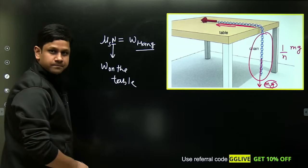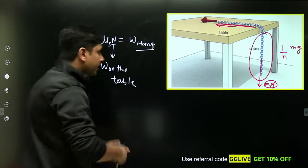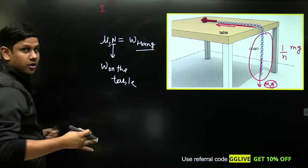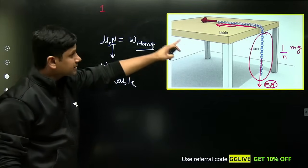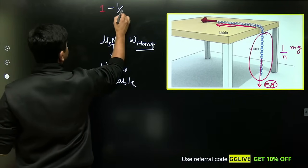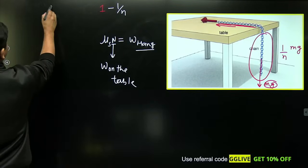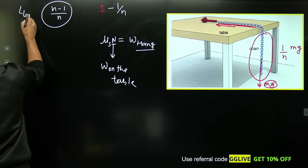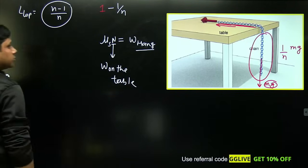Now if one upon nth part is hanging, then how much part is on the table? Total fraction is one, so if one-by-n is hanging, then part on top will be (1 - 1/n), which can also be written as (n-1)/n. This is the length which is on top of the table.